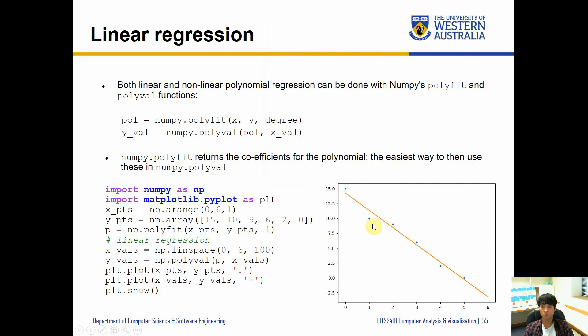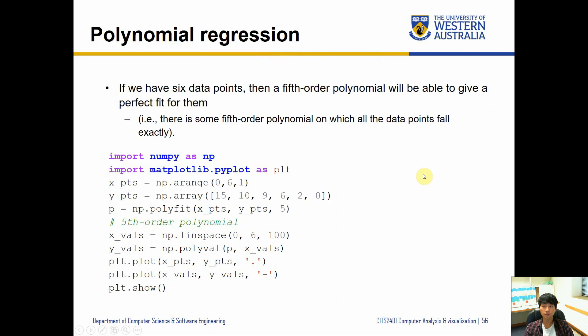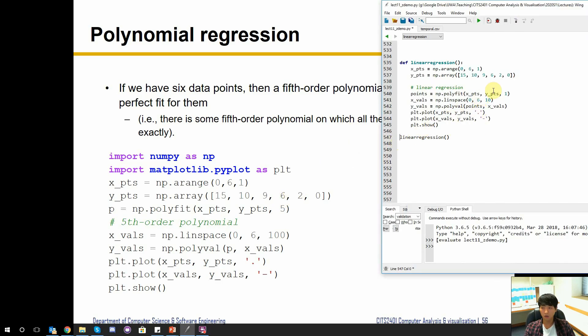As you increase this value it's going to try to fit more points using different curves. So let's have a look at this in more detail. Basically we have six data points, that means if we use a fifth order polynomial this is going to give us a perfect fit because by using a fifth order polynomial for six data points we can always find a line that's going to cross all of them. So what we're going to do is we can still use this, for example just change this into five, okay, and run it.